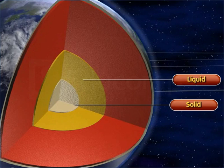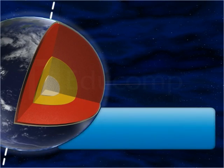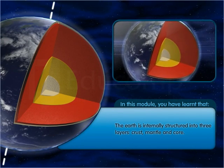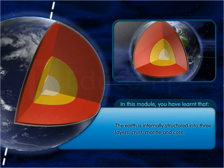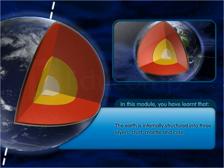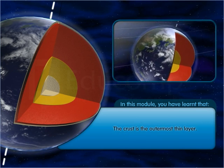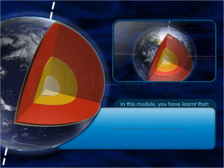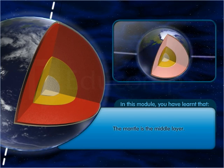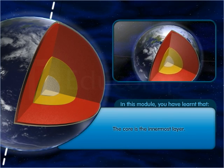The inner core is solid, while the outer core is liquid. In this module, you have learned that the Earth is internally structured into three layers: crust, mantle, and core. The crust is the outermost thin layer, the mantle is the middle layer, and the core is the innermost layer.